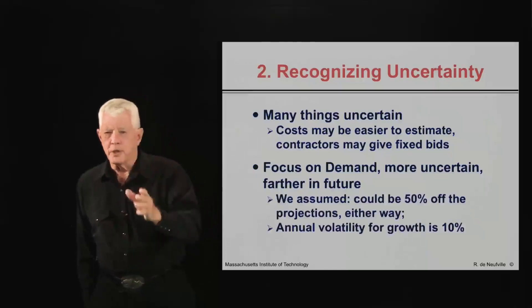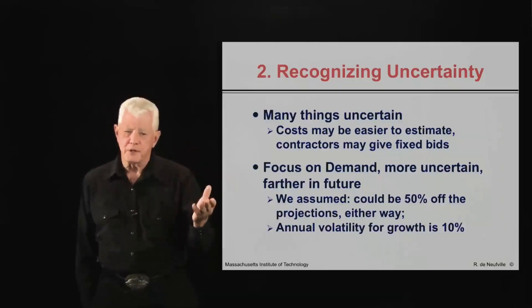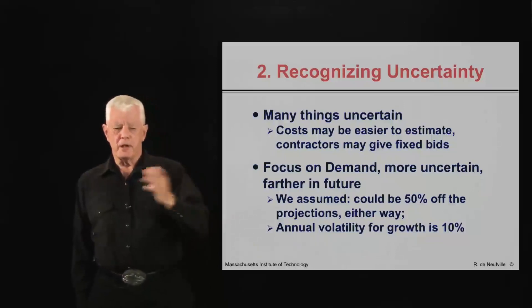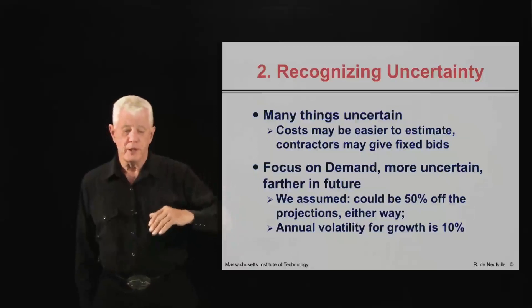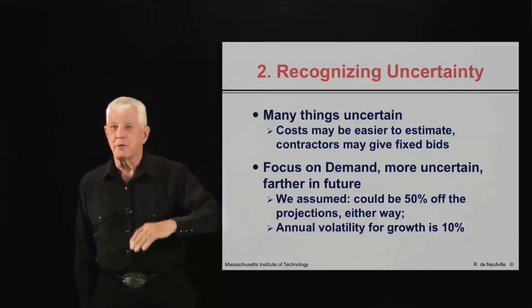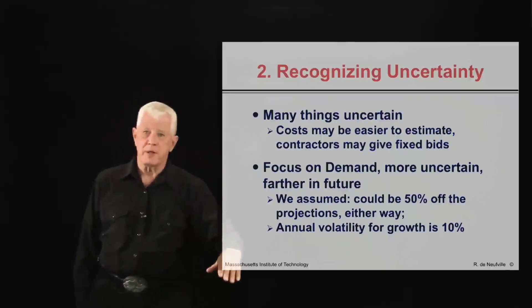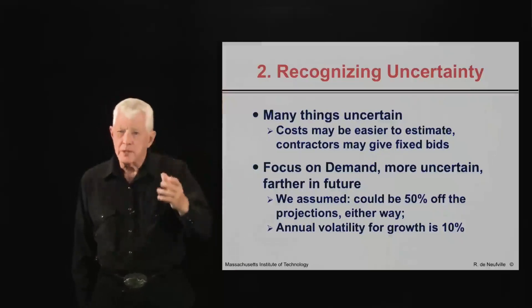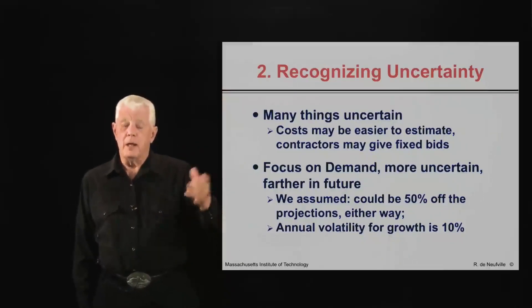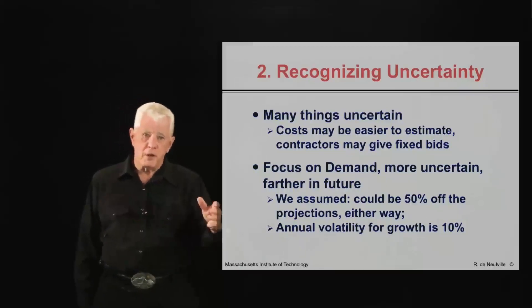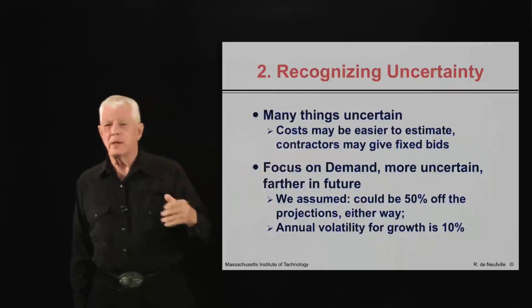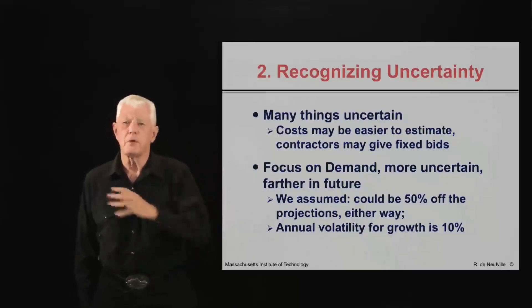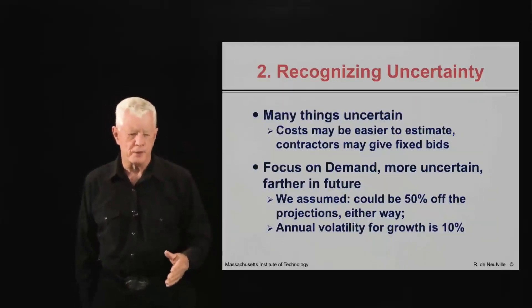For this analysis as an illustration, we assumed that the future could be 50% off either way from what was projected. And it could also be volatile — it could go up sometimes and down the next time — because that will affect the actual value calculated over time, whether it started off slow and then increased, or started high and then decreased because of competition or other factors. So we looked at all those kinds of possibilities.